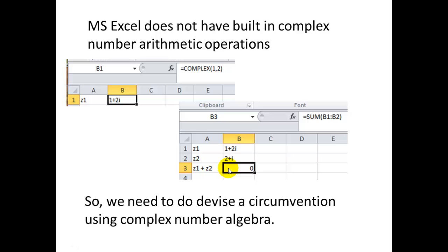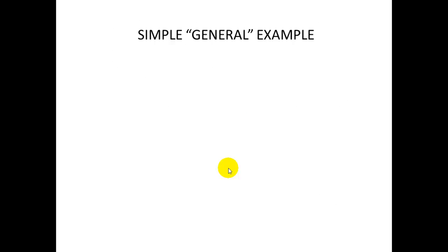We can do so using complex algebra rules. Let's take a simple general example—I put "general" in quotes because it has all the features desired in an illustration while keeping the algebra simple. Consider the polynomial x³ - x² + x - 1.